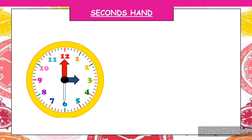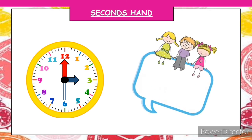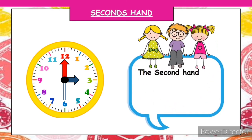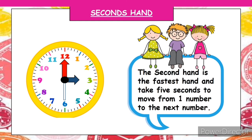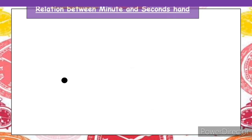The second hand is the fastest hand and takes five seconds to move from one number to the next number. It will take only five seconds to move from one number to the next number.